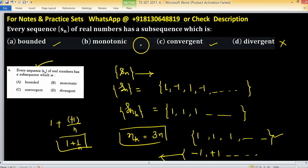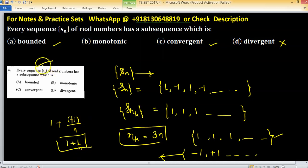So each option becomes true. But this problem should be asked in this manner: every bounded sequence has a convergent subsequence.